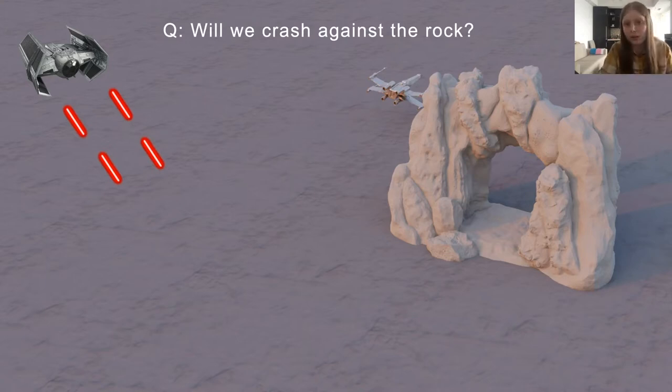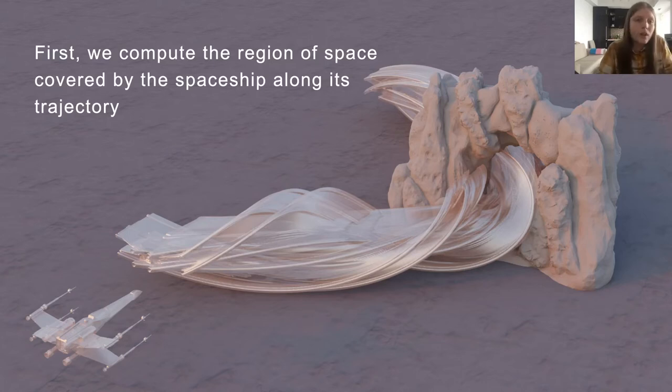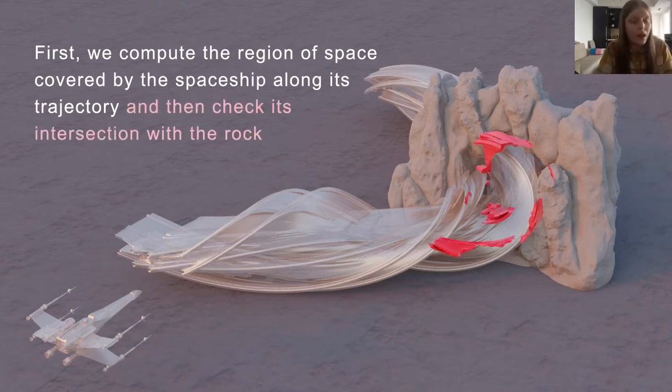Will we crash against the rock or will we clear it if we attempt the maneuver? One way of answering this question would be to compute the region of space that is covered by our spaceship along its trajectory, and then check if it intersects with the rock. In this case there is an intersection, so the computer must immediately discard the maneuver and try something else.